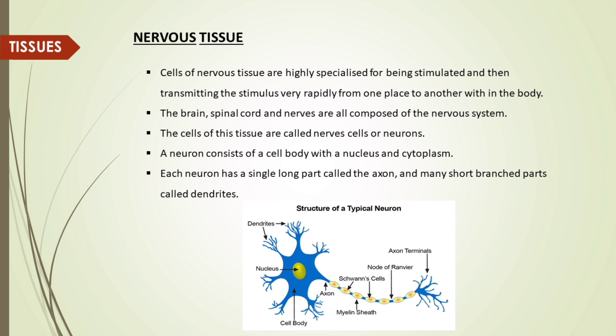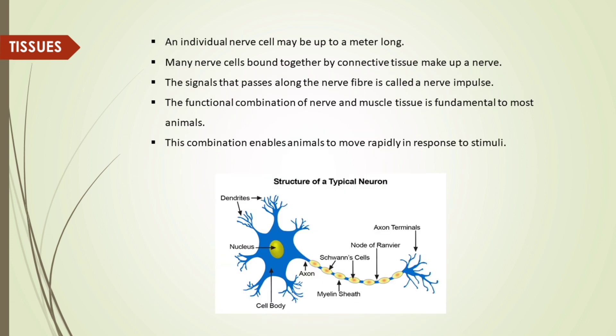The fourth type of animal tissue is nervous tissue. Cells of nervous tissue are highly specialized for being stimulated and then transmitting the stimulus very rapidly from one place to another within the body. The brain, spinal cord and nerves are all composed of the nervous system. The cells of this tissue are called nerve cells or neurons. A neuron consists of a cell body with a nucleus and cytoplasm. Each neuron has a single long part called axon and many short branched parts called dendrites. An individual nerve cell may be up to a meter long. Many nerve cells bound together by connective tissue make up a nerve.